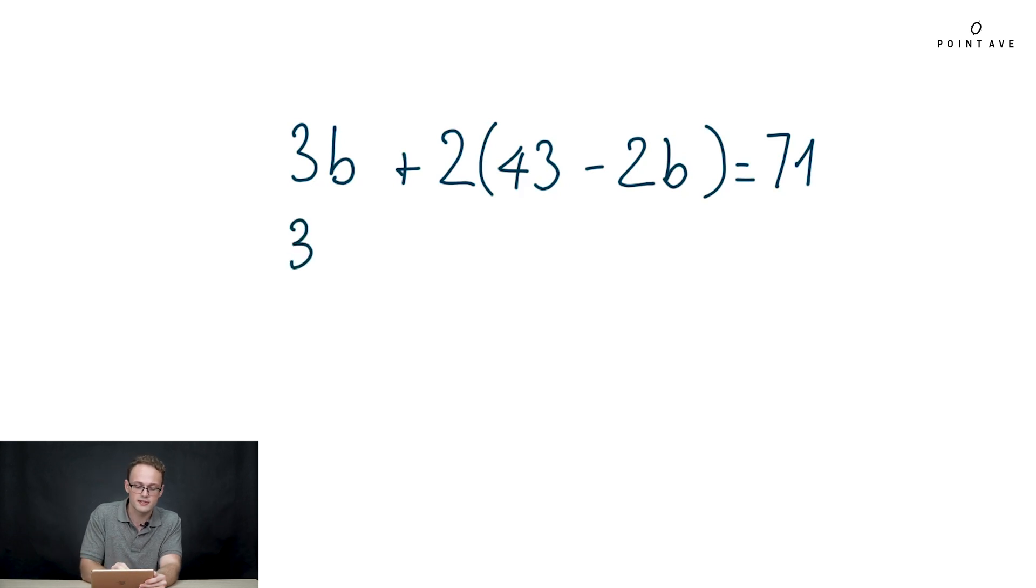We solve: it looks like 3B plus 86 minus 4B equals 71. Just after doing some simplification, combining like terms and subtracting over 86, we're going to get negative B equals negative 15.